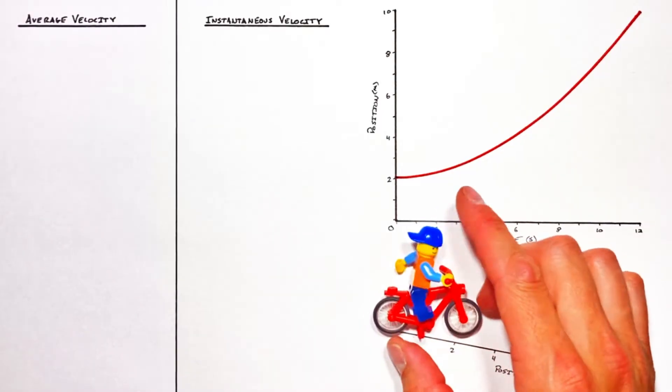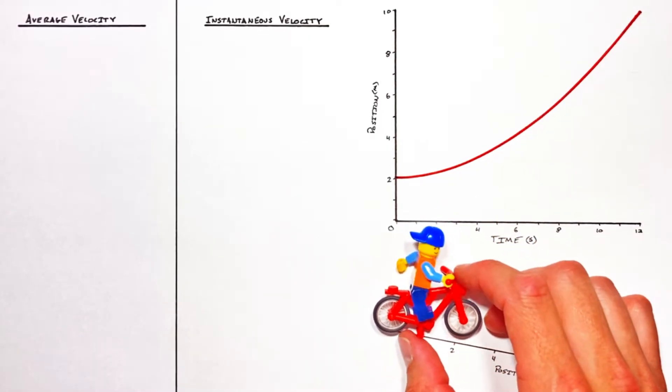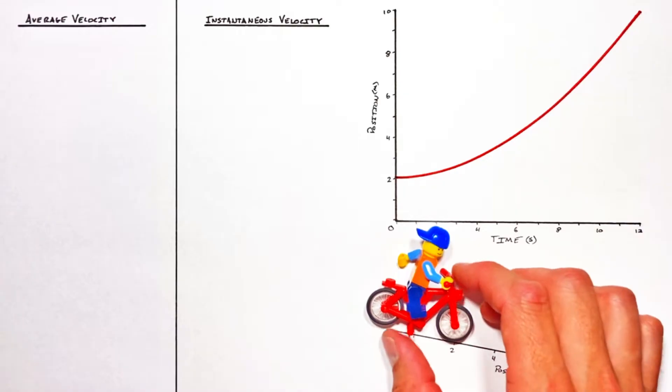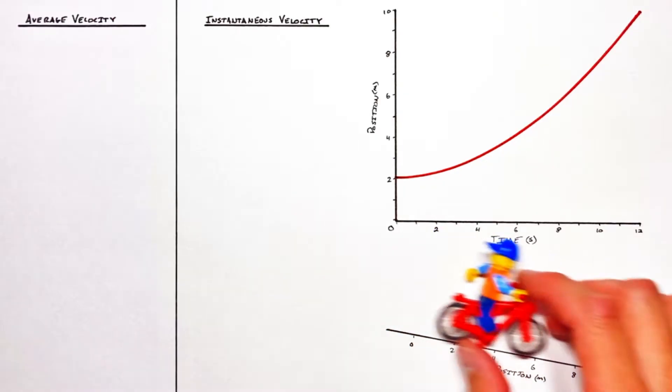So to help us out, back is our little guy on a bicycle here. We're going to let this be the object in the problem and we're going to have him coast down a hill.